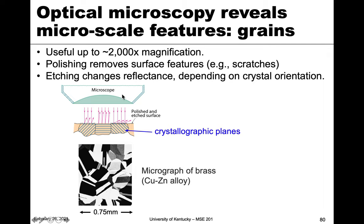Since we're not going to be able to see anything differently on that polished surface, we apply some type of etchant. An etchant is a chemical that can preferentially eat away, dissolve, or oxidize a certain part of the material relative to another, and that allows us to see differences in the structure.